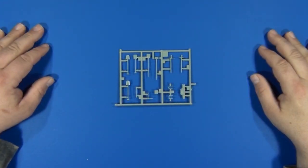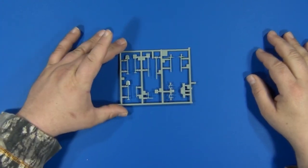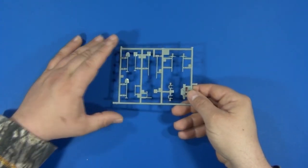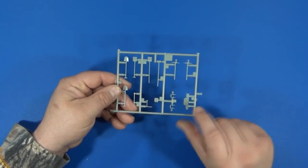This little guy here is sprue letter I and contains all of your pioneer tools and three-piece jack.